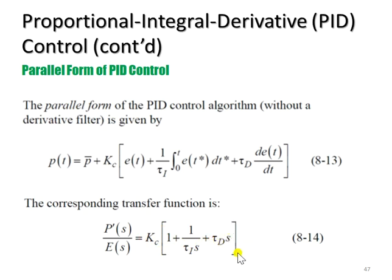So we can see each of the elements here will be multiplied with Kc. That is the parallel form of PID control.